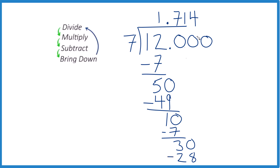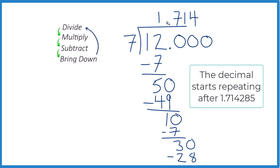So at this point, I would probably just stop and call this 1.71, or you could keep going and get some more digits. But when we divide 12 by 7 using long division, we end up with 1.714, and it keeps going for a little while. That's it.